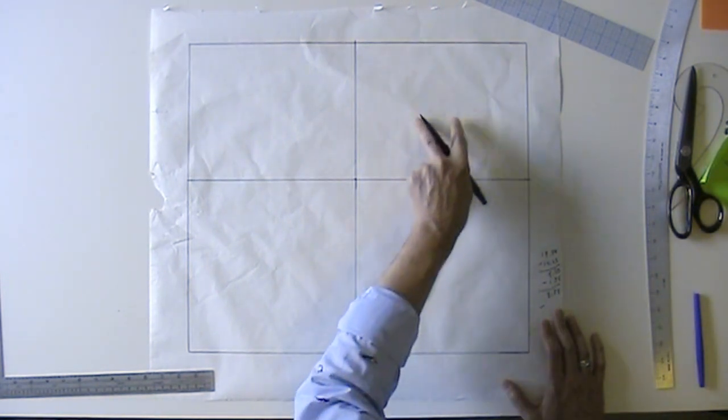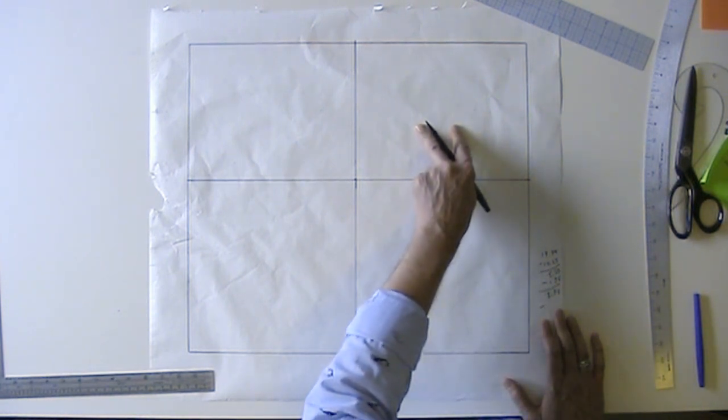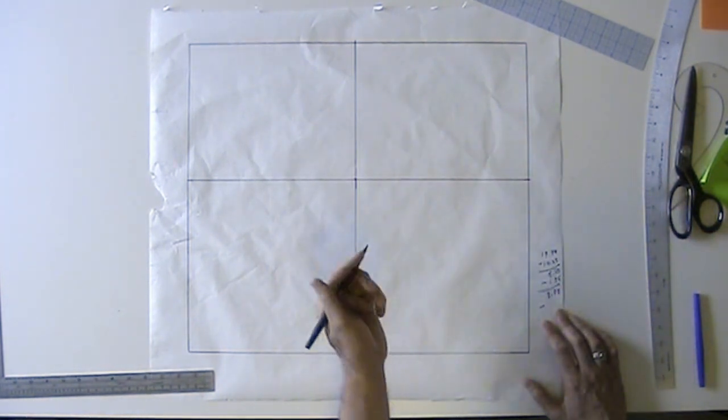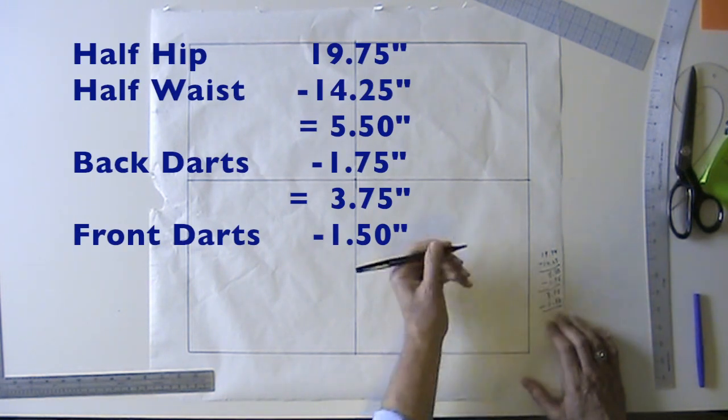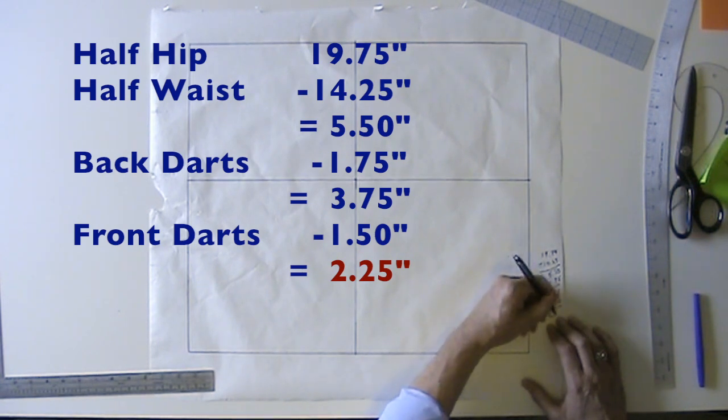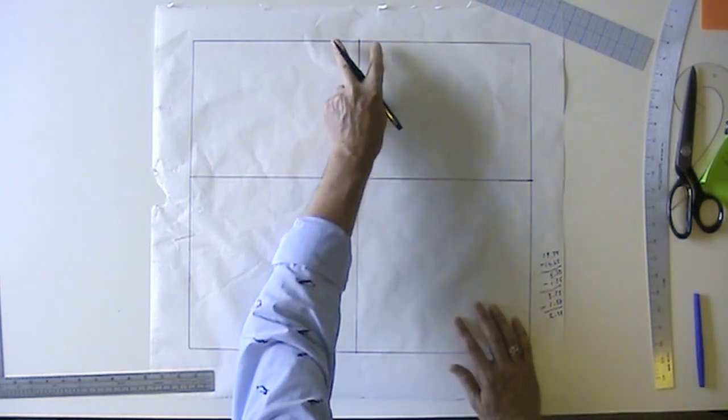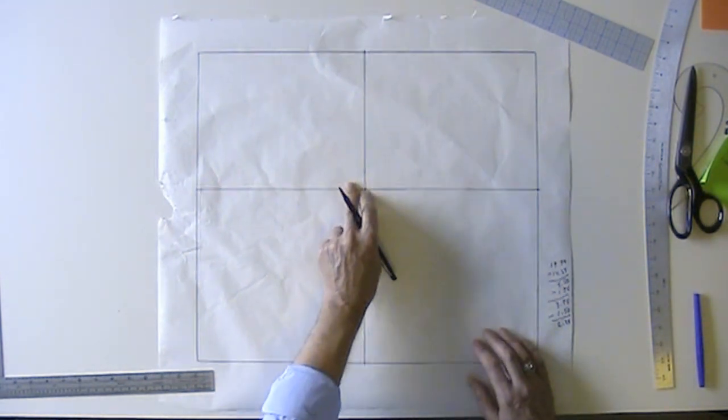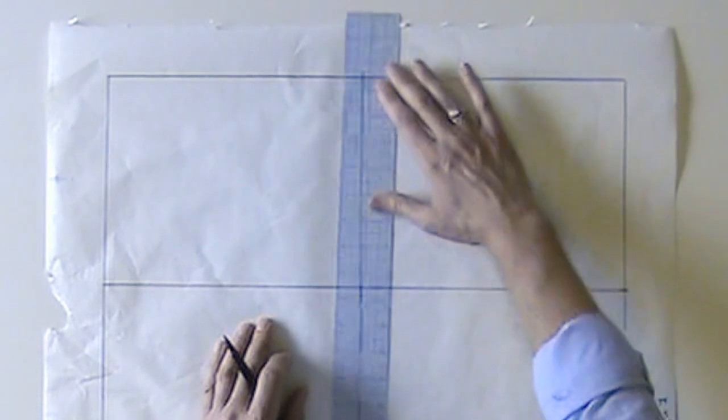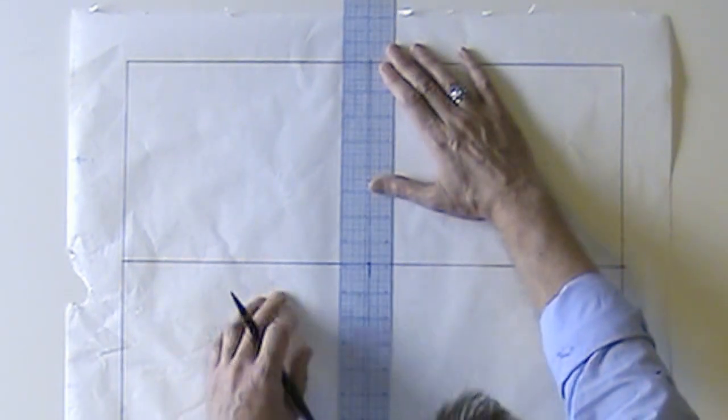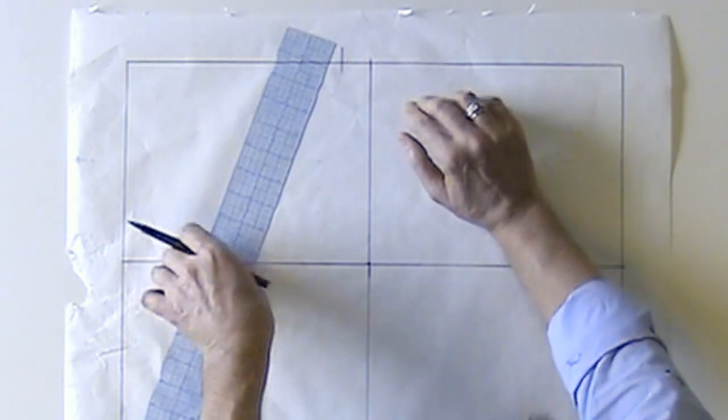I'm going to have 2 darts in the front being slightly less in depth than the back. So they will be 3/4 of an inch deep each. So 2 at 3/4 of an inch will be 1 and 1/2 inches. Subtract that, and I get 2 and 1/4 inches left. And that is the amount that we need to take out at the side seam. So I will now take that 2 and 1/4 and divide it in half and make a mark on either side of this line. So 1 and 1/8 either side of the line.